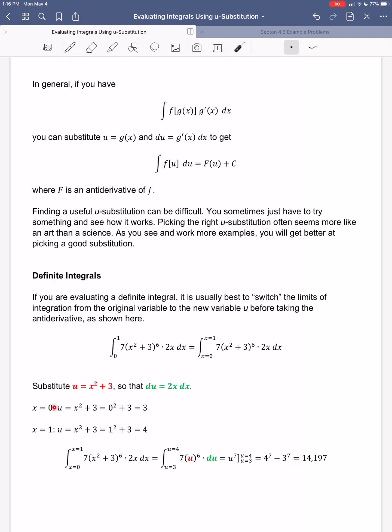So if x is 0, u, we're saying, is x squared plus 3. So if I plug the 0 in for x, I just get 0 squared plus 3, which is 3. If x is 1, I just put 1 in for x. 1 squared plus 3 is 4. So instead of going from 0 to 1 for x, I'm going from 3 to 4 for u, and then I make this substitution. So I get u to the 7th, like we did before, but now I'm going from u equals 3 to u equals 4.